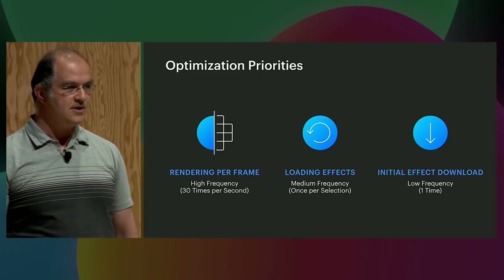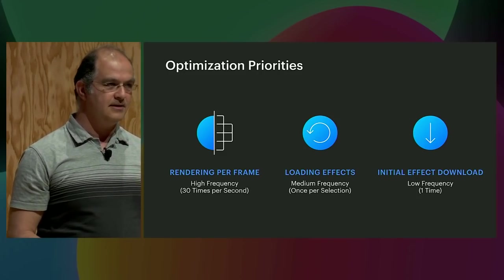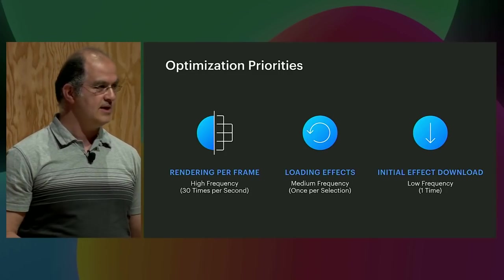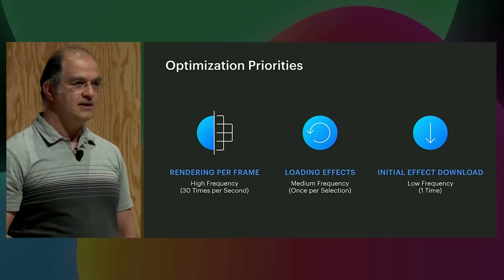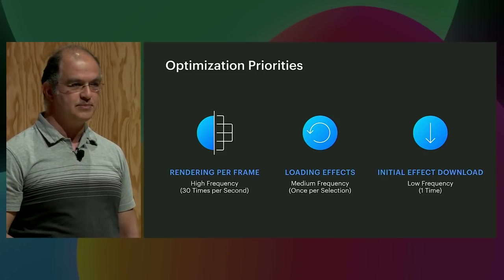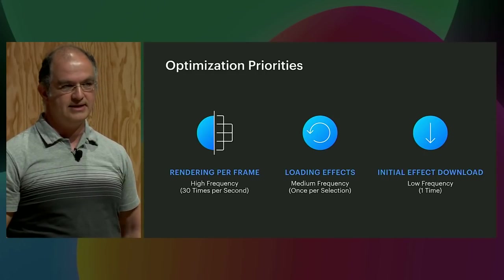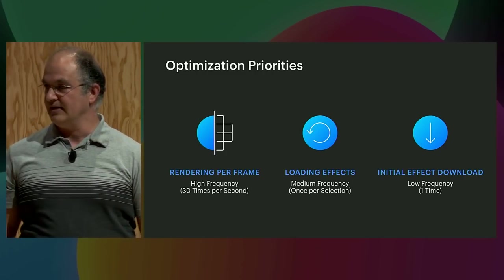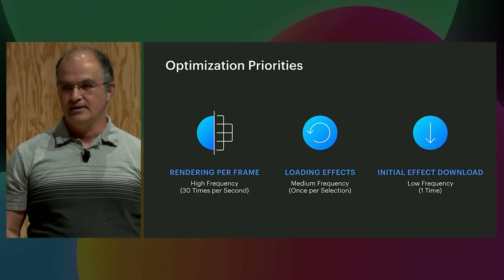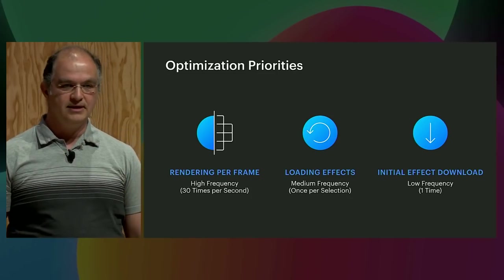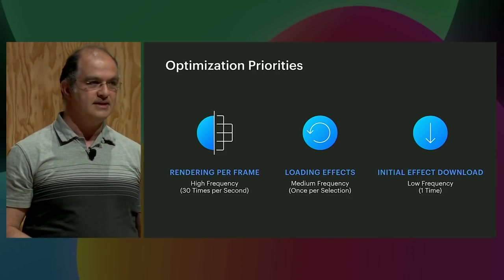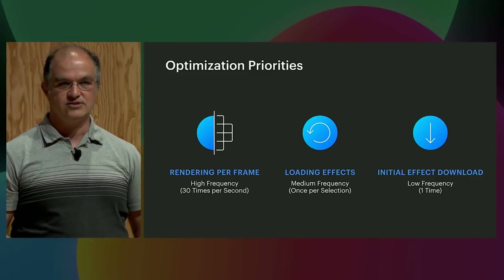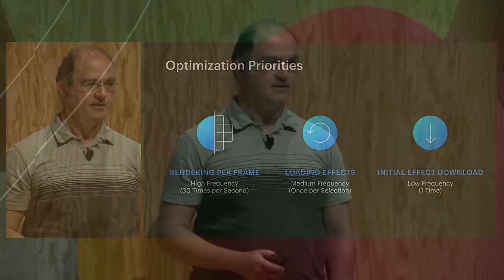When optimizing, it's important to consider the various aspects of your effect to optimize. You might optimize for rendering performance, which will impact your users at 30 times per second, assuming your effect is running at 30 frames per second on most user devices. Or on the opposite end of the spectrum, you might want to optimize for loading time, which is a one-time hit the very first time a user downloads your effect — just as critical because that's the beginning of the funnel, and if it takes too long, users will never even see your effect.